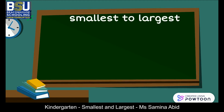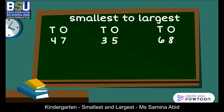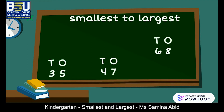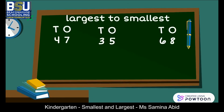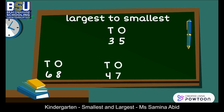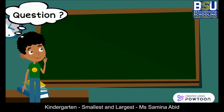Now we will arrange these numbers from smallest to largest: 47, 35, and 68. The smallest number, 35, will come first, then 47, and 68 will be written at the end as it is the largest. Arranged from largest to smallest: 68 with eight ones comes first, then 47, and the smallest number 35 is written at the end.